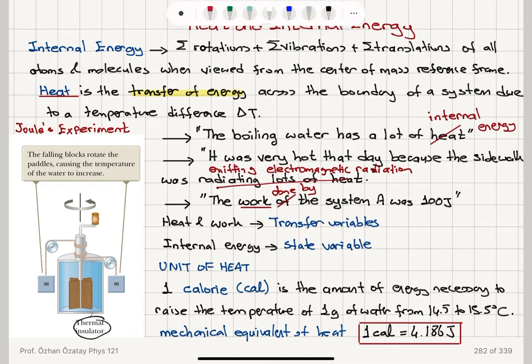We only talk about work done on a system or by a system. We only talk about heat absorbed or released by a system. We don't talk about heat of a system or work of a system. And also, we talk about emission of electromagnetic radiation instead of radiation of heat. Heat is not something that is radiated like electromagnetic radiation.